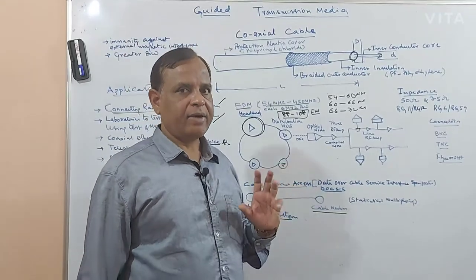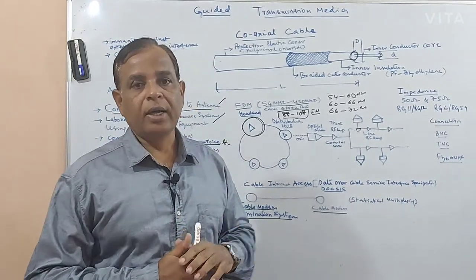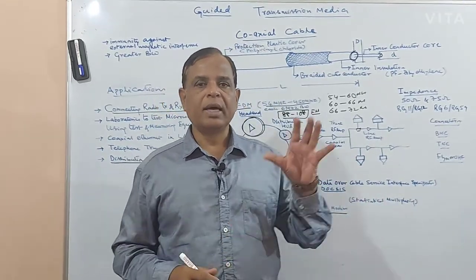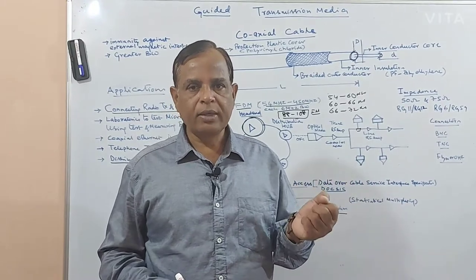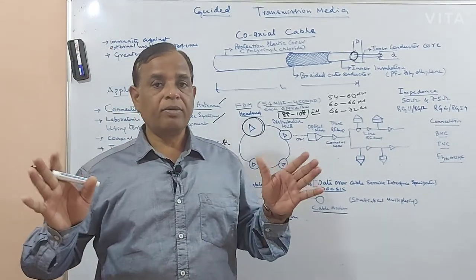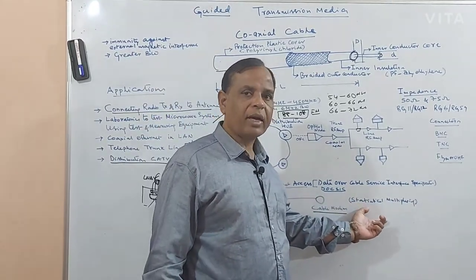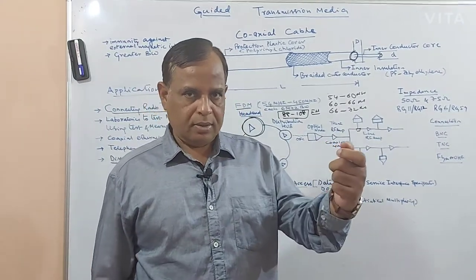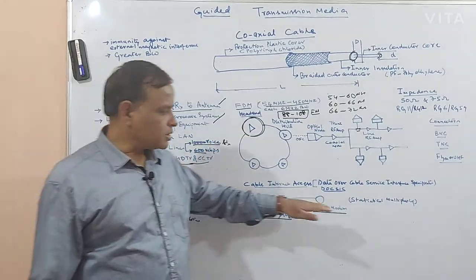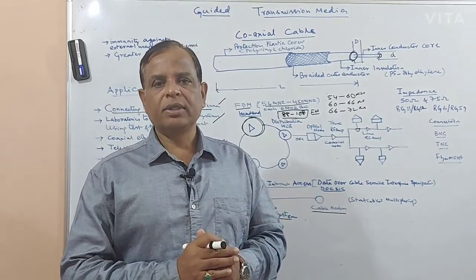Then came one particular concept called statistical multiplexing, giving the service provider control over the user. That's why you have flexible internet plans — the person paying more money wants more bandwidth, so he is given more bandwidth, and the person paying less money gets accordingly. Several plans came into existence with different speeds. The service provider has control on bandwidth from the central head end, giving fair usage of bandwidth to customers.